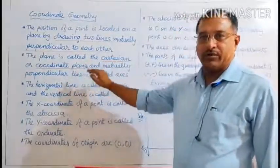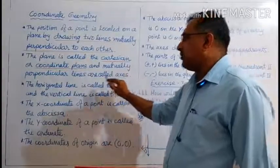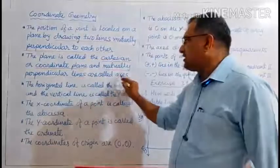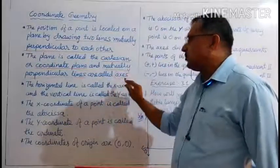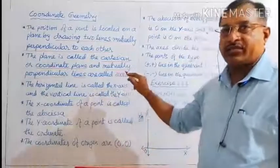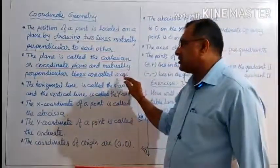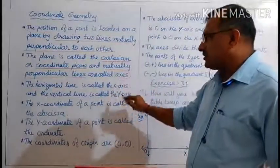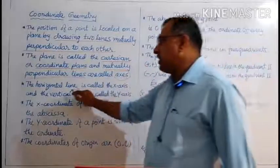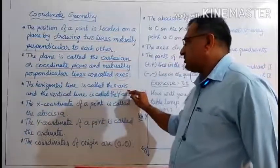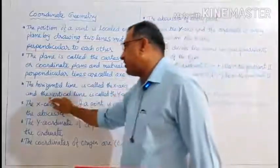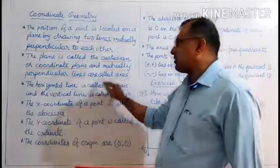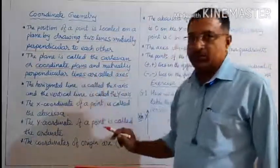We call it the Cartesian Coordinate Plane or Cartesian Plane. The mutually perpendicular lines are called axes — in plural, axes. There are two axes: the X axis and the Y axis. The horizontal line is called X axis and the vertical line is called Y axis. These two are mutually perpendicular lines in a plane.